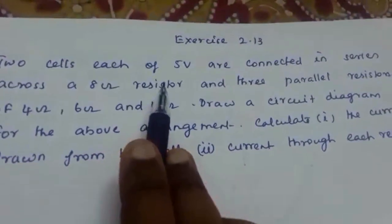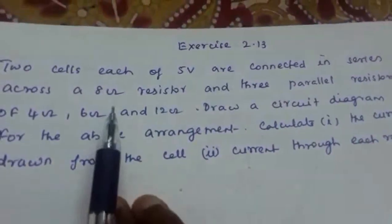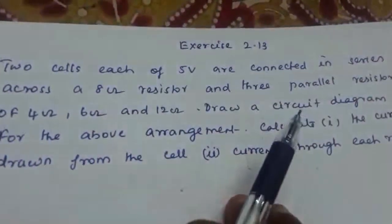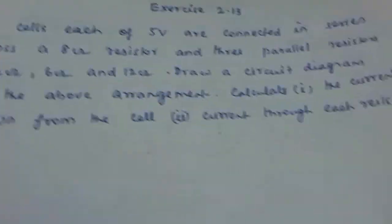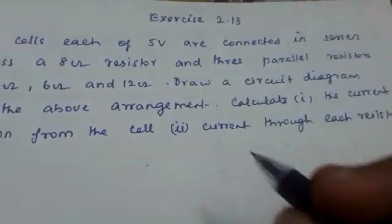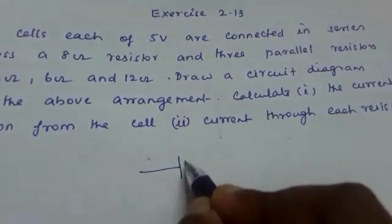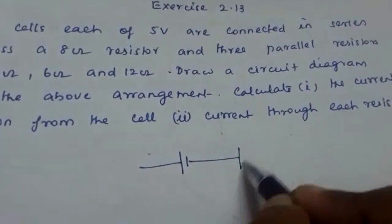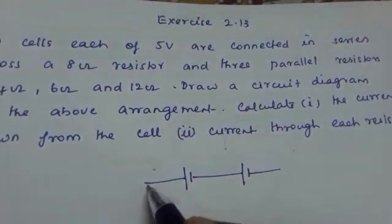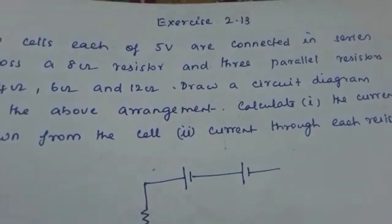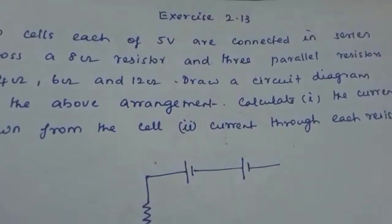Two cells of 5 volts are connected in series, so we draw one cell and another cell in series. This is in series connection with a resistor, so we draw another resistor here.